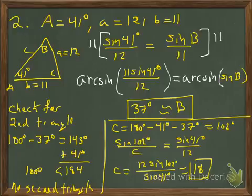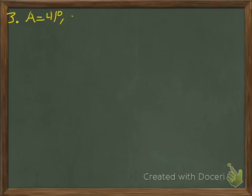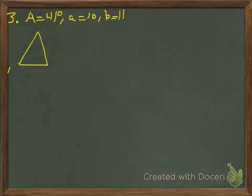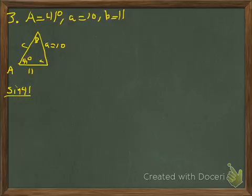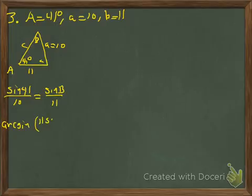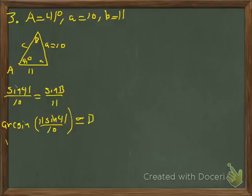That's the one-triangle solution. Let's look at one more example using the law of sines, where we change side a to 10 and side b to 11 — still a side-side-angle setup. Using sine of A over a equals sine of B over b, we multiply by 11 to clear the fraction, then take the arc sine of 11 sine of 41 over 10. Angle B is approximately 46.2 degrees.